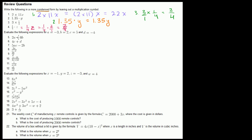Now we need to evaluate the following expressions where a equals 3 — actually, a equals negative 3 (negative is the correct terminology), b equals 2, c equals 5, and d equals negative 4. We just substitute: every time we see an a, we put negative 3; every time we see a b, we put 2; every time we see a c, we put 5; and every time we see a d, we put negative 4. I'll do a couple of these for the sake of time.